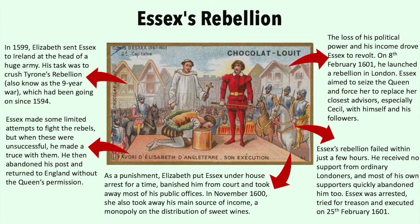The loss of his political power and his income drove Essex to revolt. On 8 February 1601, he launched a rebellion in London. Essex aimed to seize the Queen and force her to replace her closest advisors, especially Cecil, with himself and his followers. Essex's Rebellion failed within just a few hours. He received no support from ordinary Londoners, and most of his own supporters quickly abandoned him too. Essex was arrested, tried for treason, and executed on 25 February 1601.